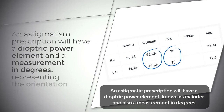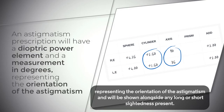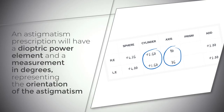An astigmatic prescription will have a dioptric power element known as cylinder, and also a measurement in degrees representing the orientation of the astigmatism. This will be shown alongside any long or short-sightedness present.